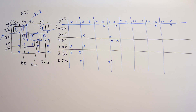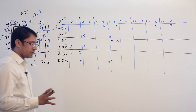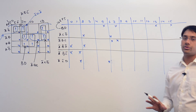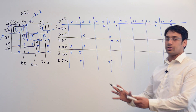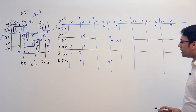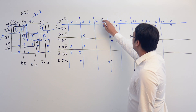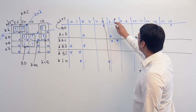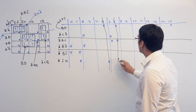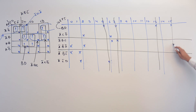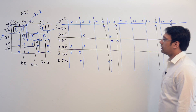Let us identify what are the different solutions we can have — what are the prime implicants which can be there in the solution. BD should be there. BD is covering 5, so no one else needs to cover 5. BD is covering 7, so no one else needs to cover 7. BD is covering 13 and 15, so no one else needs to cover those either.